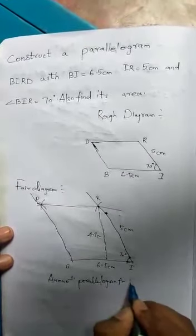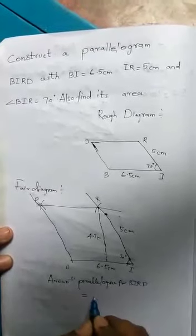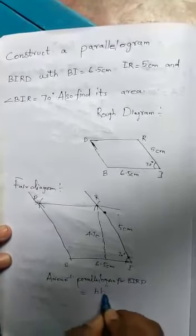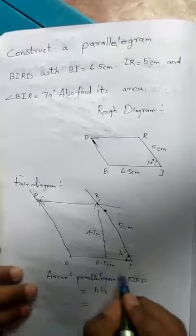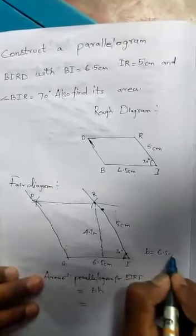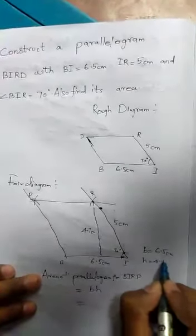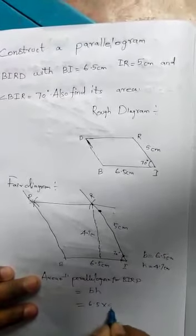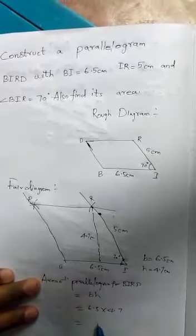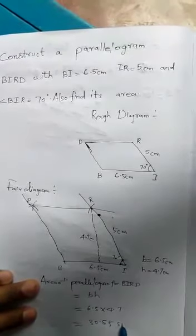For parallelogram BIRD, use the area formula: Area equals Base times Height. The base is 6.5 cm. We calculate the area: 6.5 times 4.5 cm. The answer is 30.55 square centimeters.